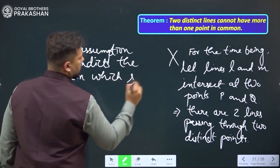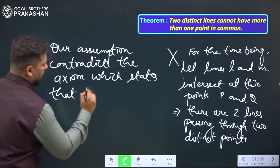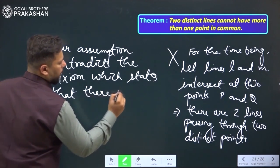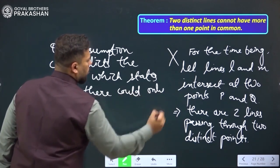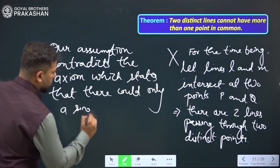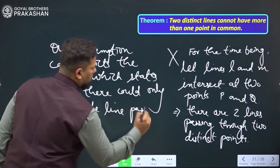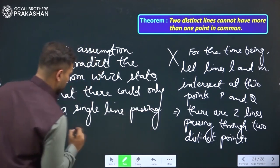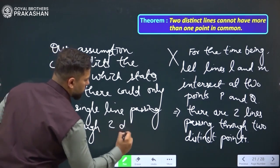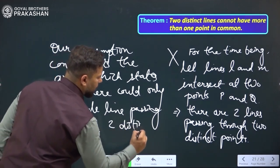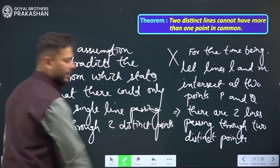which states that there could be only a single line passing through two distinct points. Right?